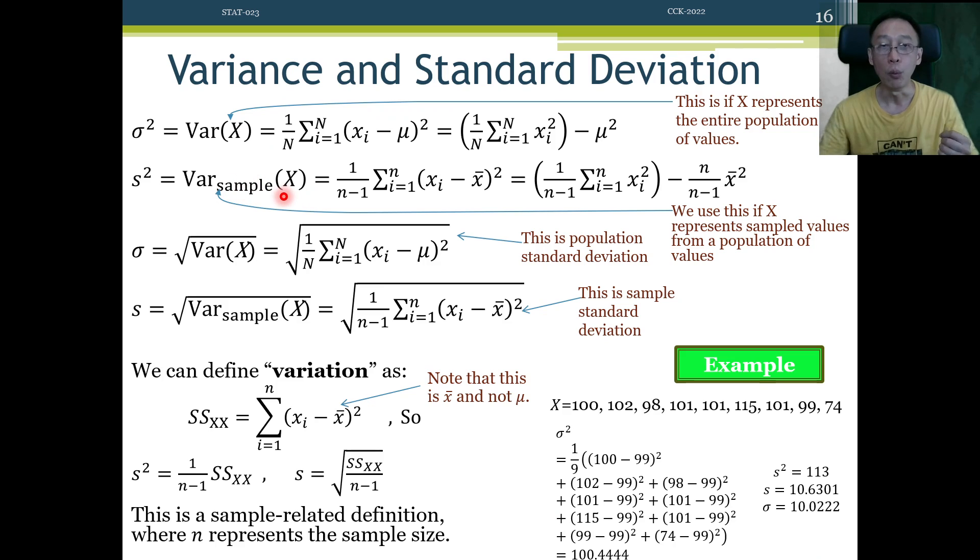Then why sample standard deviation? Well, the mathematics is such that instead of dividing by capital N, remember capital N represents the entire population's count. And little n is a standard notation used to represent the size of the sample. Remember, we talked about population and sample and sample size. So to be mathematically correct in the sense that we have unbiased, that is to say we are neither leaning towards the higher estimate or lower estimate. And we can show that it is basically not having a tendency to be showing a larger number or showing a smaller number. And that's called unbiased. So we need to divide by n minus 1.